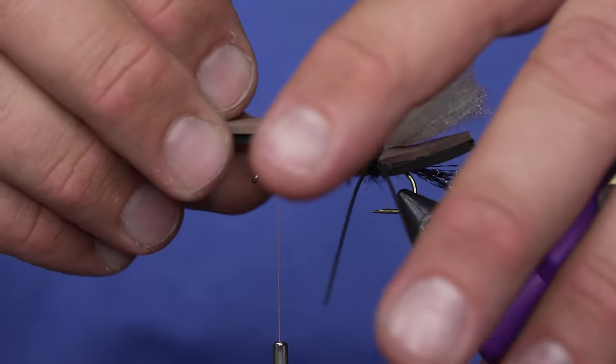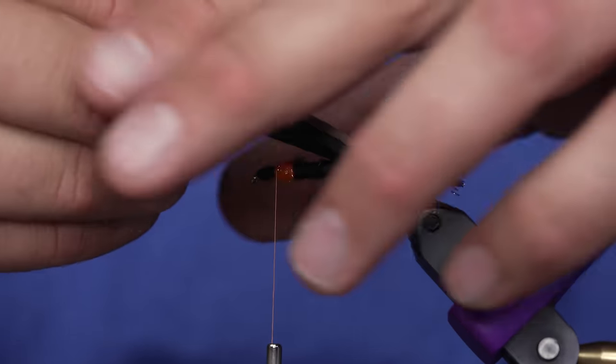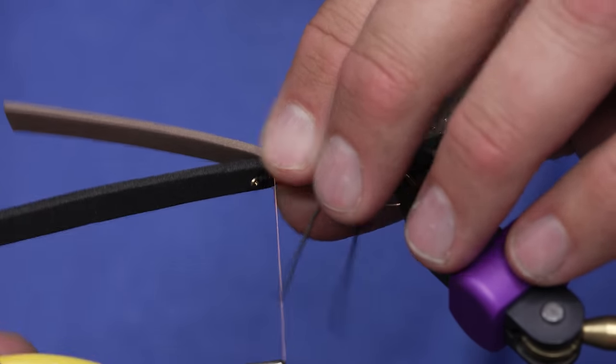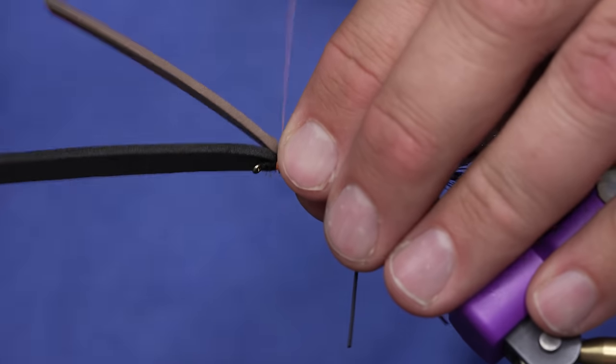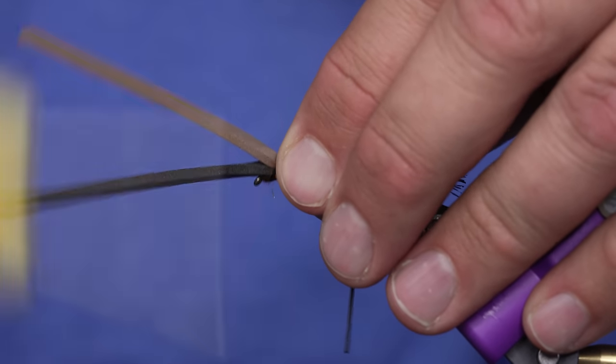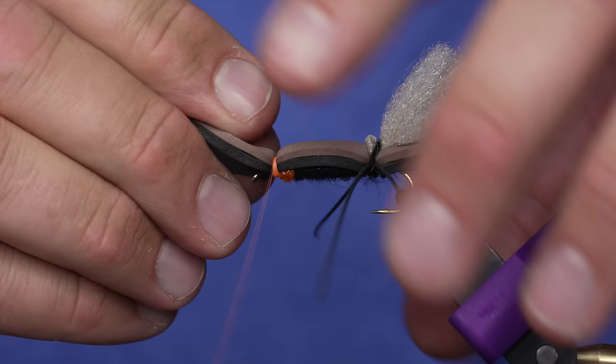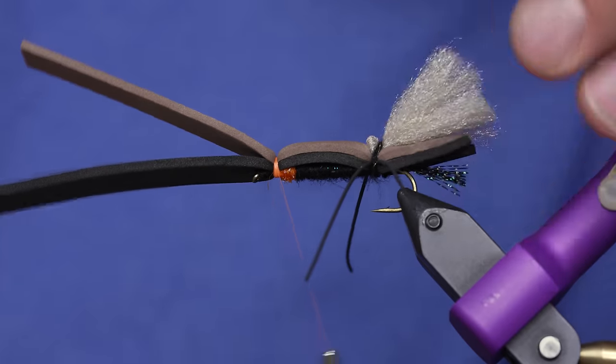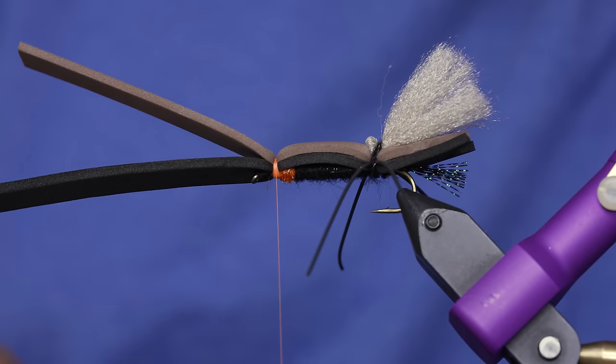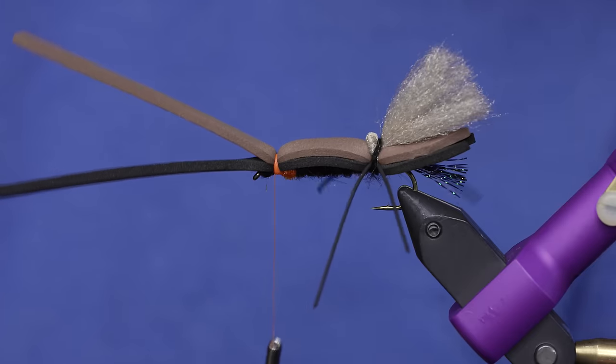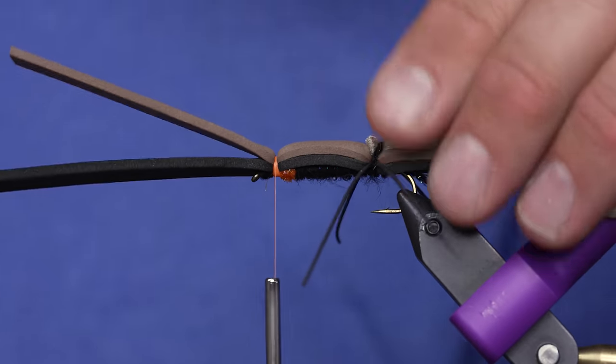So from here I'm just going to pull these foam pieces over, tie those in. And if you cinch too tight at the get-go of tying these foam pieces in, you can cut right through them. So start with medium tension and then get tighter as you wrap in. So as you can see, that's a real nice clean thread band here.